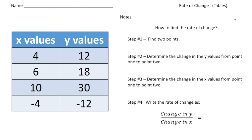So just a reminder about what exactly rate of change is: rate of change describes how one quantity changes in relation to another. I've created a four-step process to find the rate of change from a table.